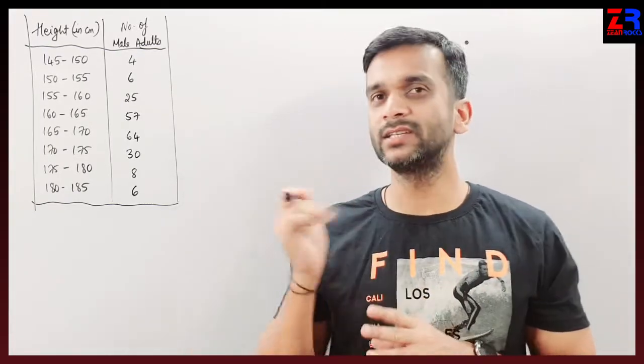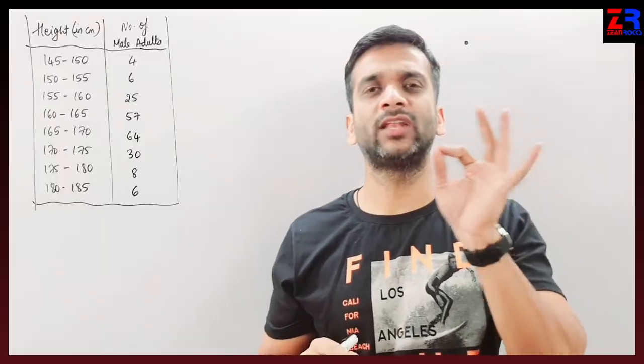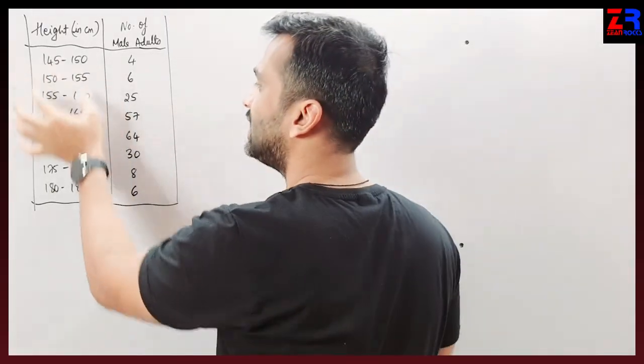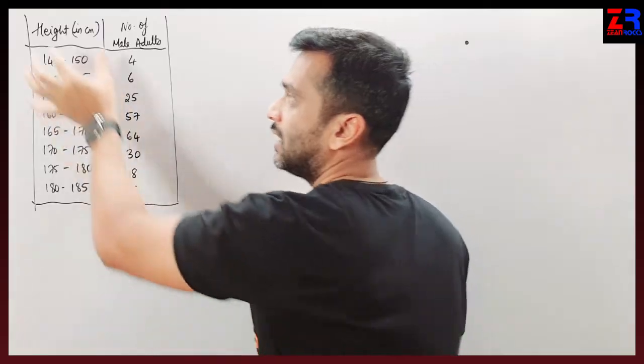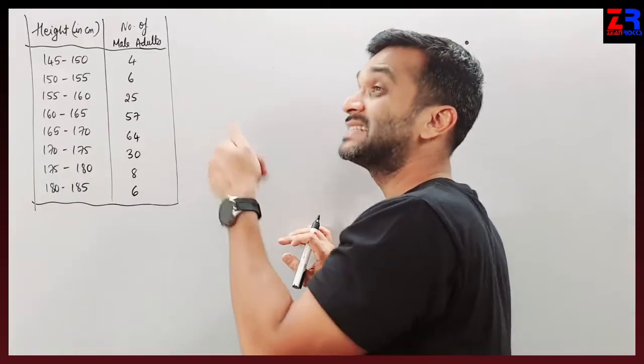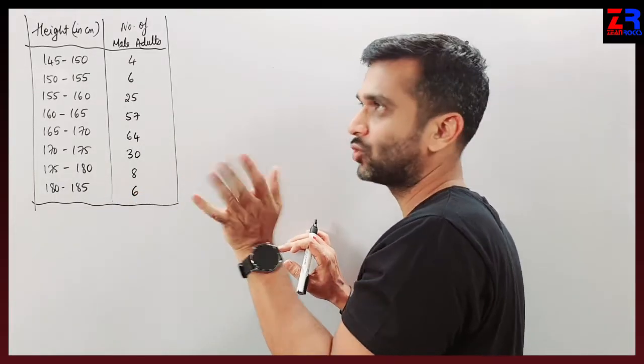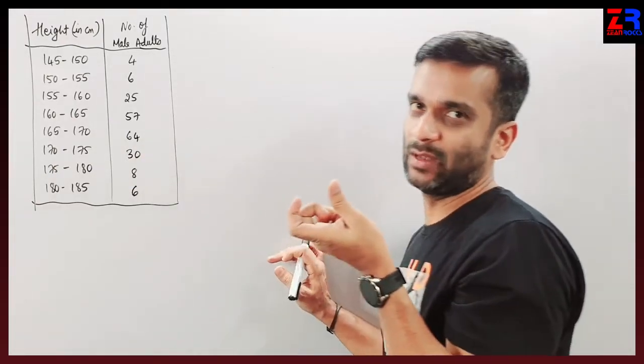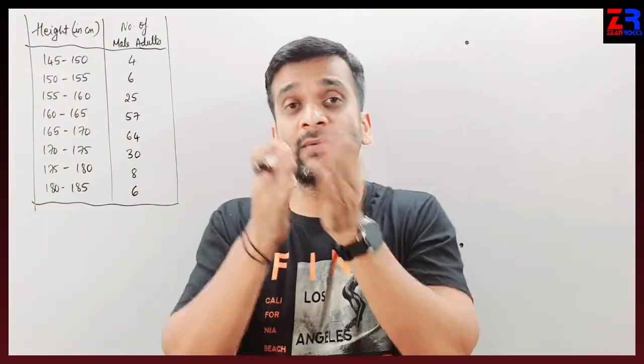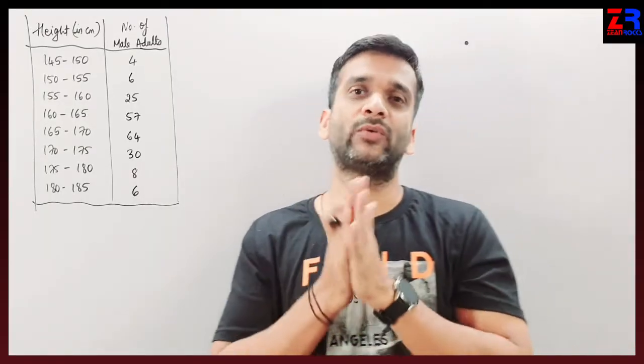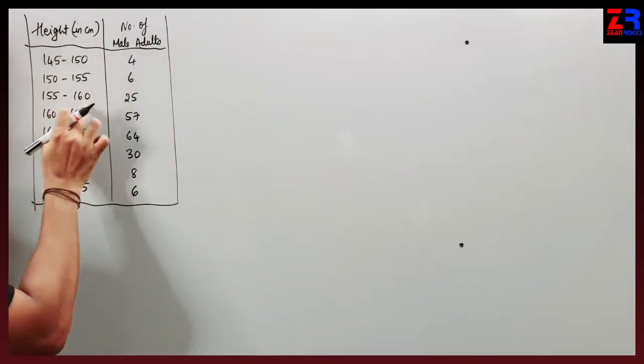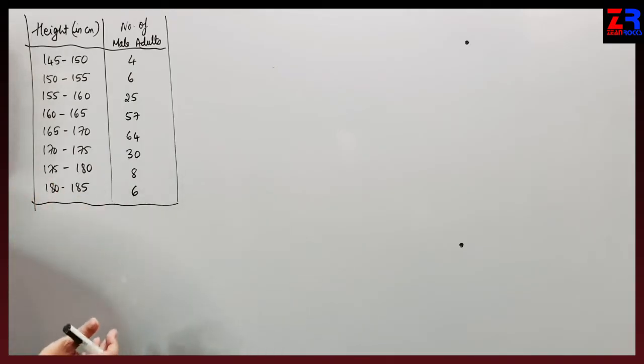This is the last question of today's video. Here we are supposed to find only the quartile 2 value. This is a table where class intervals are given - this is a grouped frequency distribution table in continuous form.